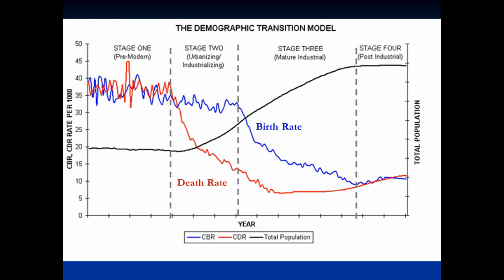The textbook shows birth rates and death rates as equal in the pre-industrial stage — I disagree. I would show continued growth through pre-industrial, transitional, and the first half of the industrial stage, before a leveling off. In the transitional stage you see a big decline in death rates. As women enter the workforce in the industrial stage, birth rates also begin to decline. In the post-industrial stage, both birth and death rates are low, and education becomes increasingly important — as education increases, birth rates decline.